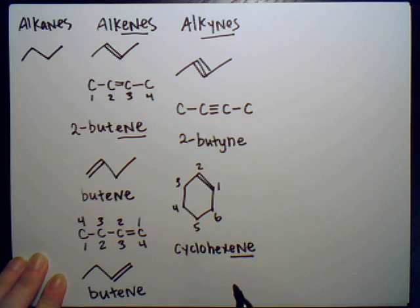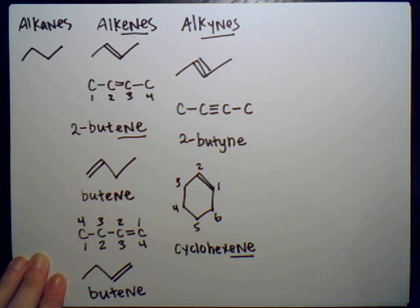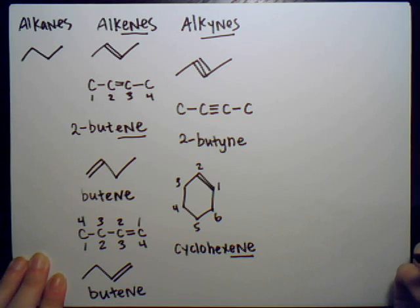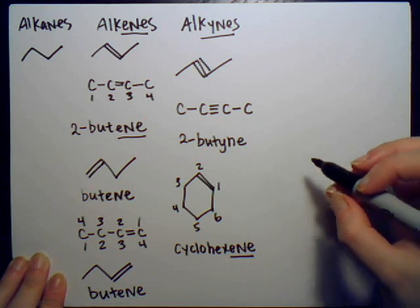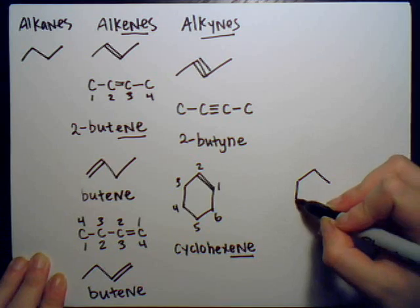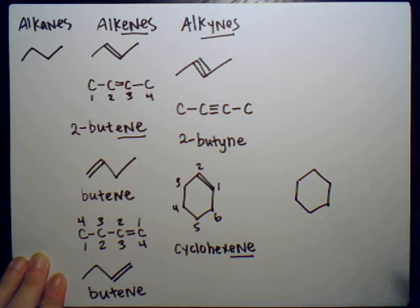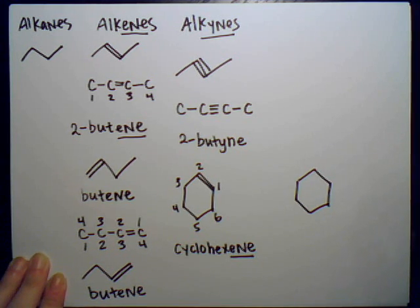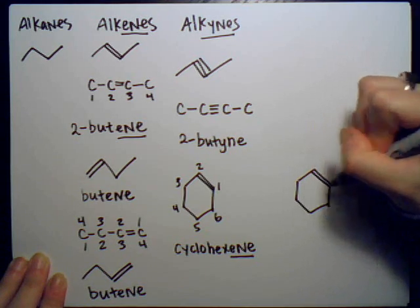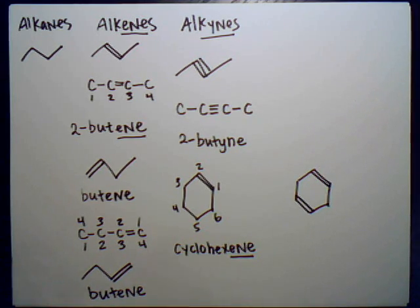There's no number specified because the double bond occurs on carbon one. The ending '-ene' indicates the double bond. What if a cycloalkene had two double bonds? The same rule applies for multiple double bonds — two, three, or four — and the same for triple bonds.